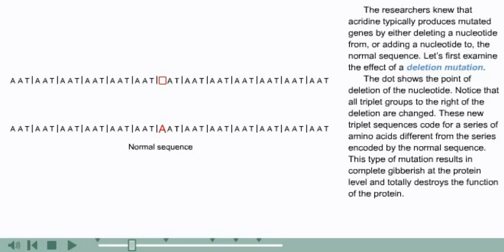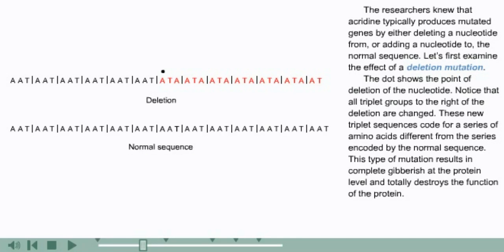Let's first examine the effect of a deletion mutation. The dot shows the point of deletion of the nucleotide. Notice that all triplet groups to the right of the deletion are changed. These new triplet sequences code for a series of amino acids different from the series encoded by the normal sequence. This type of mutation results in complete gibberish at the protein level and totally destroys the function of the protein.